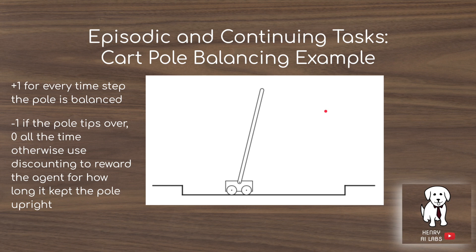There are two kinds of tasks we'll distinguish: episodic and continuing tasks. Using the cart-pole balancing example — if you've used OpenAI Gym, this is an episodic implementation where you get a plus-one reward for every time step the pole is balanced, and when the pole tips over the episode ends and restarts. Alternatively, a continuing task might give zero reward all the time and minus one when it tips over, using discounting to reward the agent for keeping the pole balanced over many time steps.